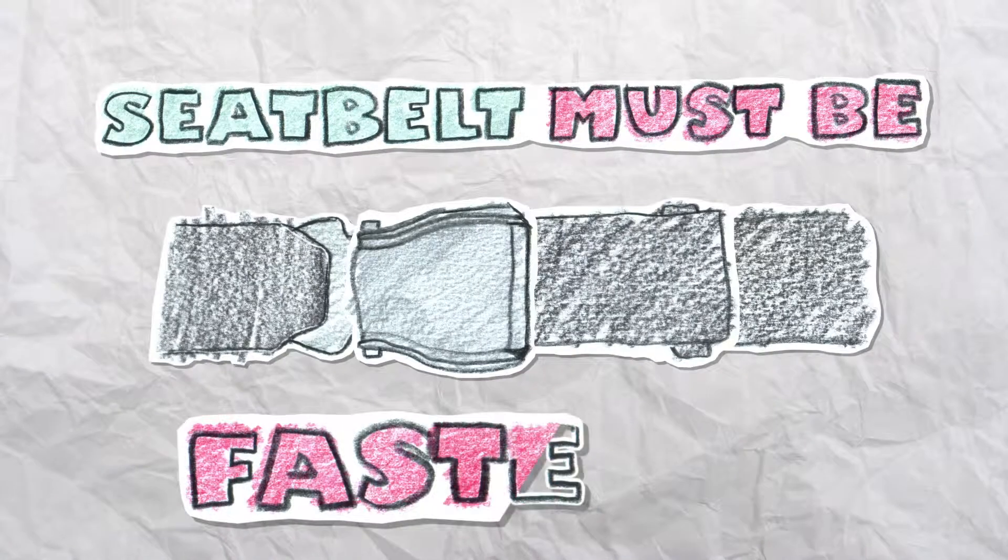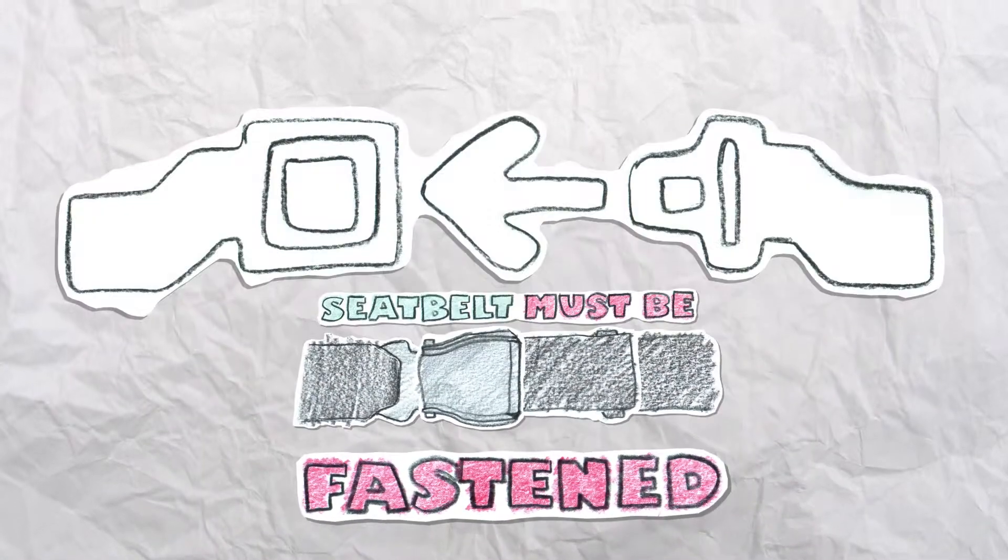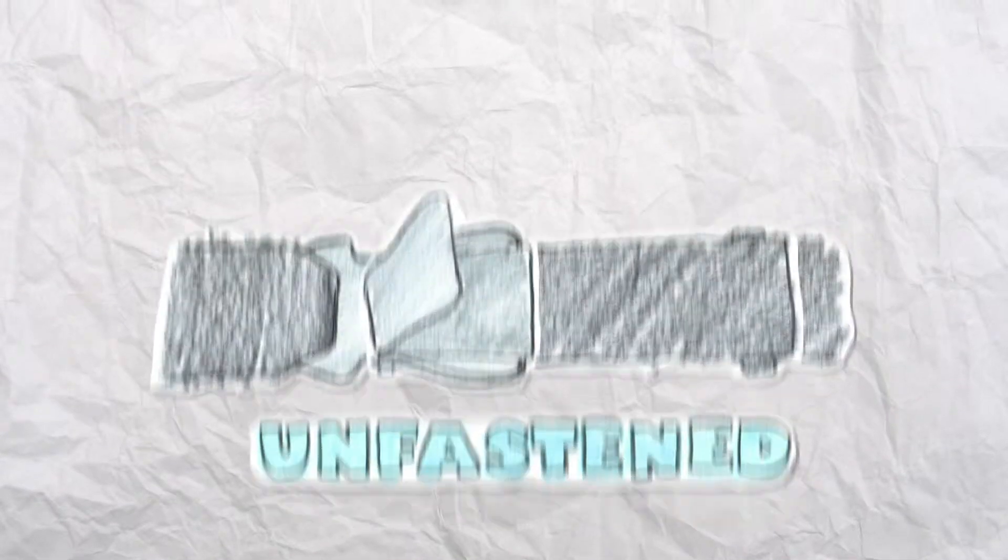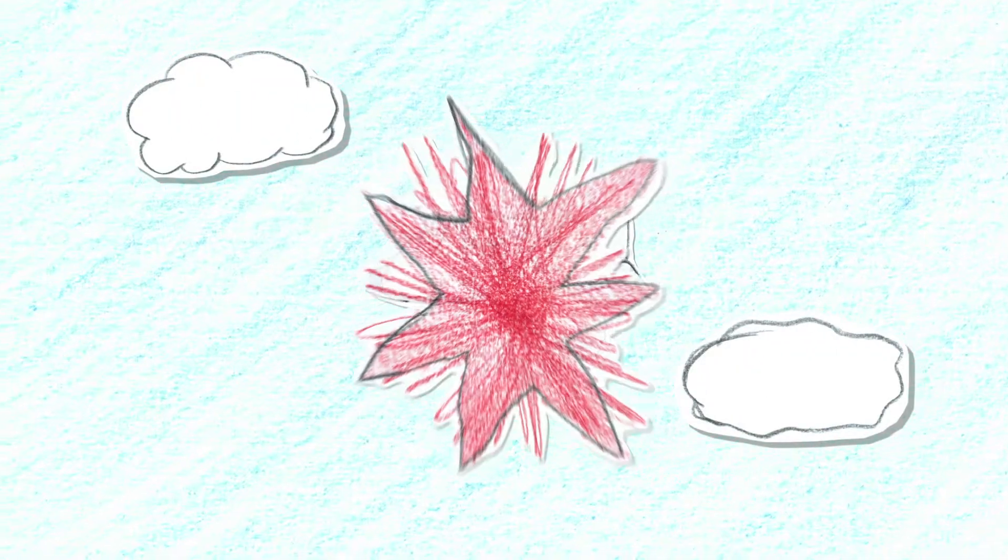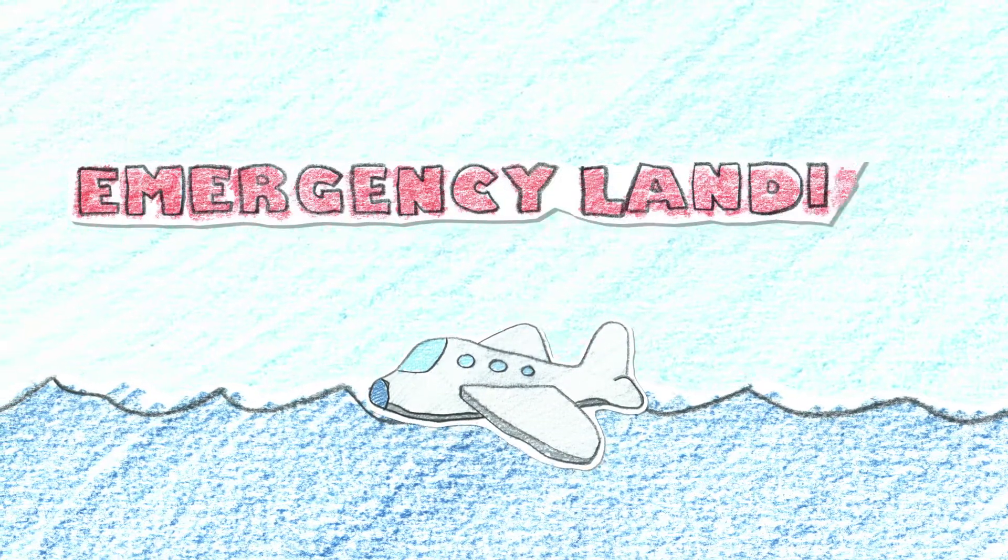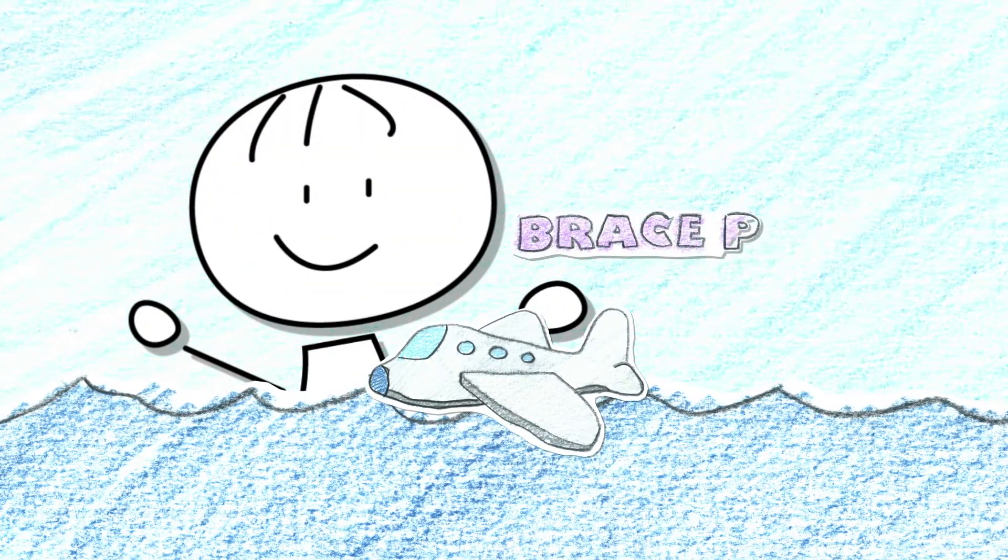Your seatbelts must be fastened whenever the seatbelt signs are on. Your seatbelt is fastened, adjusted and unfastened like this. In the unlikely event of the aircraft having to make an emergency landing, you must adopt the brace position.